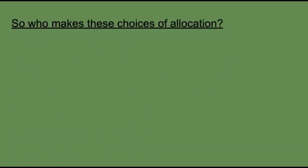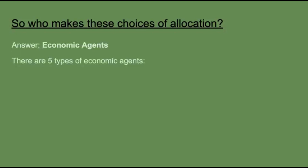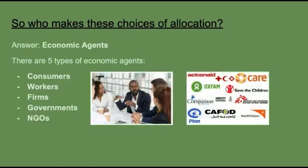So who actually makes these choices of allocation? The answer is economic agents. There are five different types of economic agents: consumers, who are the people buying things; workers, the people working for companies; firms, who employ workers and sell to consumers; governments, who allocate funds; and non-government organisations such as charities.